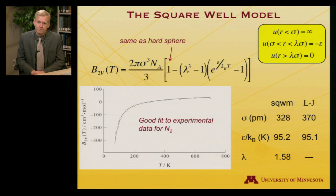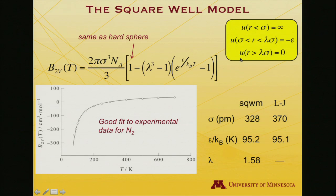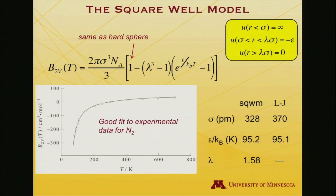Now let's take a look at the square well model. When we plug in the three different conditions — infinite potential inside the hard wall, a region of attractiveness, and a region of no interaction — we'll have three different integrals. The last one goes to zero just as in the hard sphere case, and the first one gives the same hard sphere result. Plugging in minus epsilon for the argument of the exponential in the second integral, you end up with lambda cubed minus one, times e to the positive epsilon over kT minus one. This is essentially a three-parameter model, with sigma, epsilon, and lambda — the parameter telling us over what distance the attractive interaction persists.